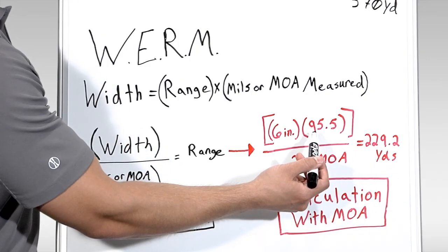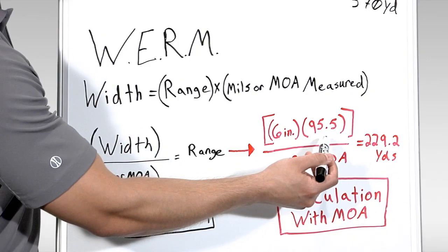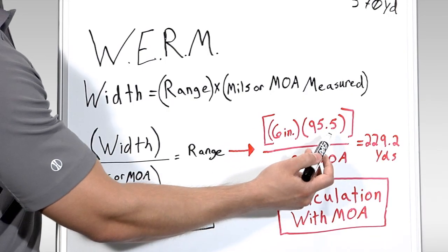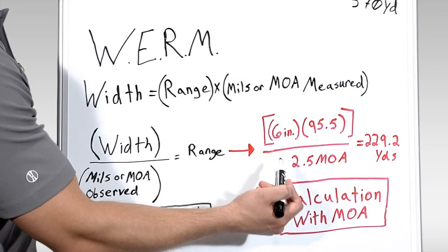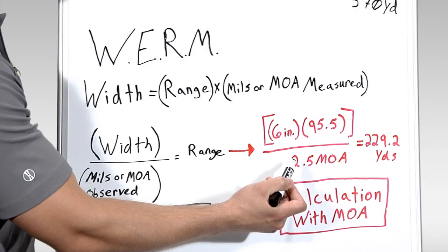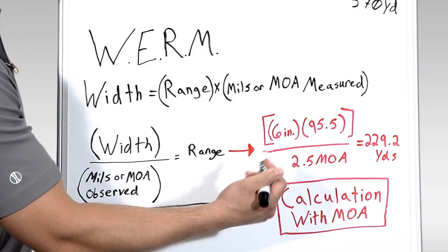Some shooters and observers will use 100 in place of 95.5 for the sake of simplicity, but keep in mind that if you leave this number, you will experience a 5% overestimation in yardage. And this needs to be compensated for down the road, or you'll experience an inaccurate reading.